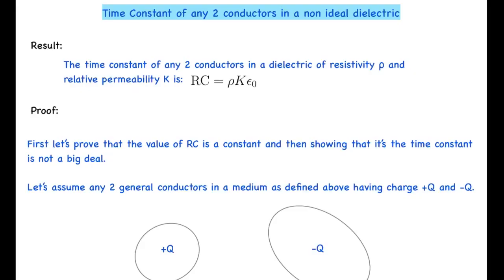In this video we are going to be looking at a result related to the time constant of any two conductors in a non-ideal dielectric which has some resistivity ρ. The result is: RC equals ρkε₀, where k is the relative permittivity of the medium. It is a pretty nice and very general result.